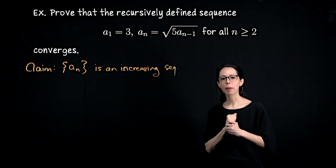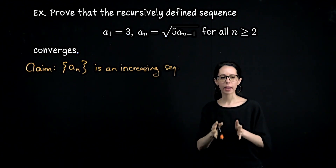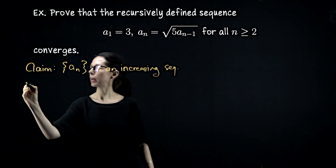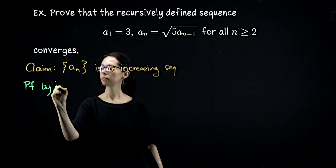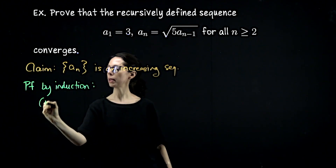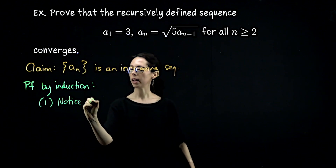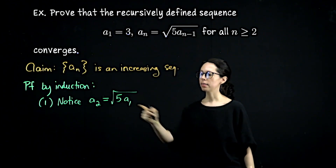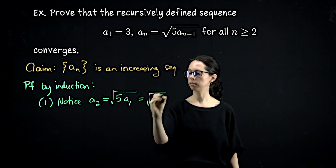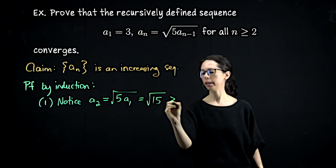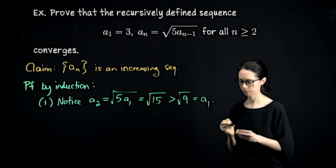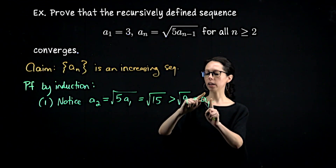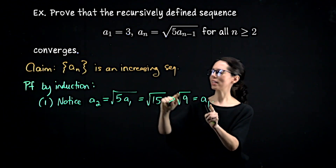I'll also show this by induction, inducting on pairs of adjacent terms. Base case: the relationship between a sub 1 and a sub 2. A sub 2 by definition is the square root of 5 times a sub 1, which equals the square root of 15. This is greater than the square root of 9, which equals 3, which is a sub 1. So a sub 1 is less than or equal to a sub 2.